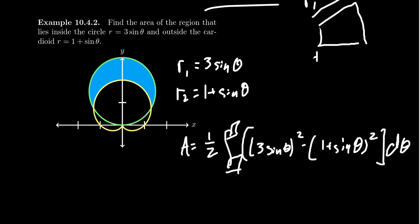To identify the bounds, we need to find the points of intersection. One helpful observation is that this region is symmetric along the y-axis. So we just need to find the angle theta at the lower intersection point, integrate from that angle to pi halves, and then double the result. Conveniently, the pi halves bound is easy to handle at the top, and doubling cancels the one-half out front — that'll be nice.